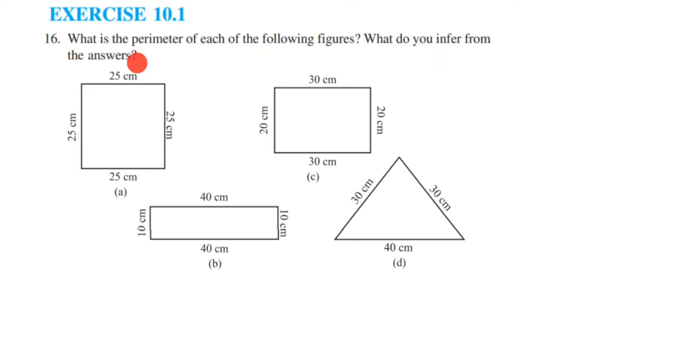Now let us find out the perimeter. The first one is in the shape of a square, and we know that perimeter of square is 4 times side. So perimeter equals 4 times side, which is 4 times 25, equals 100 centimeters.